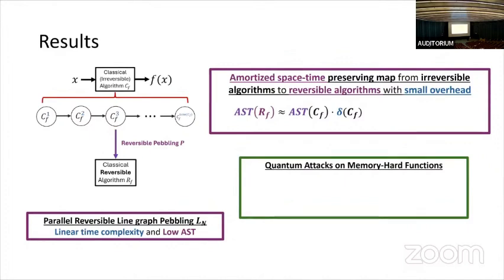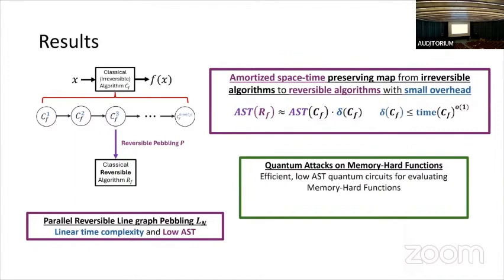We provide quantum attacks on memory-hard functions, a cryptographic primitive used for storing passwords whose security relies on high amortized space-time complexity. Using our transformation, we can port over existing classical attacks and now have efficient amortized space-time complexity quantum circuits for those attacks, enabling pre-image search and similar techniques to defeat the primitive. One application is an attack on Argon2i, the 2015 password hashing competition winner, but our results apply to essentially all memory-hard functions.